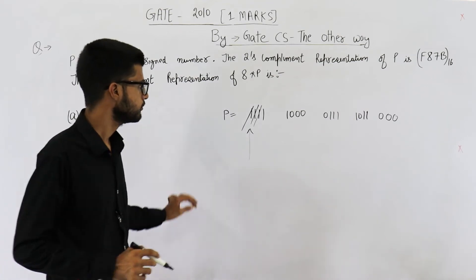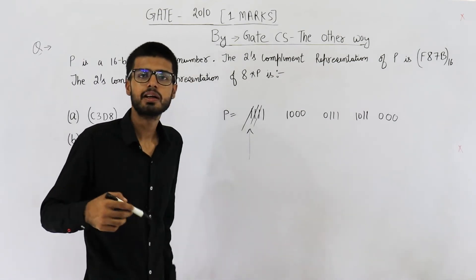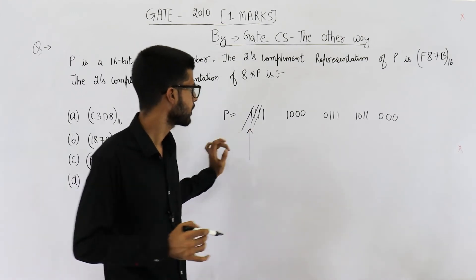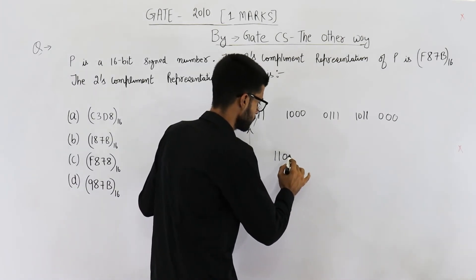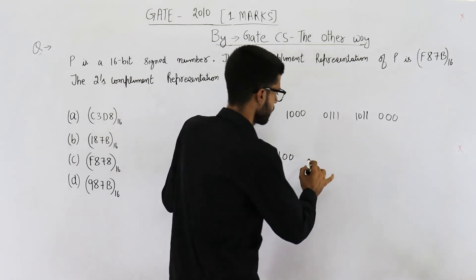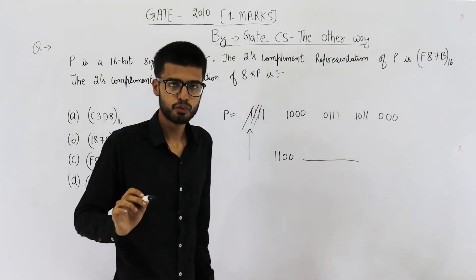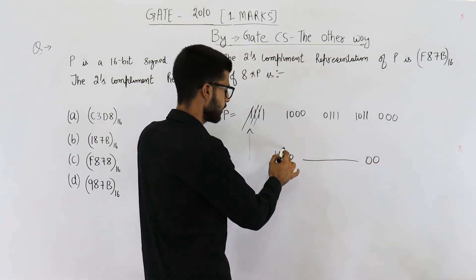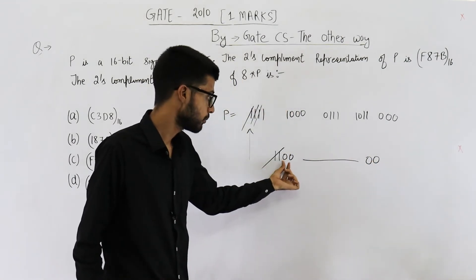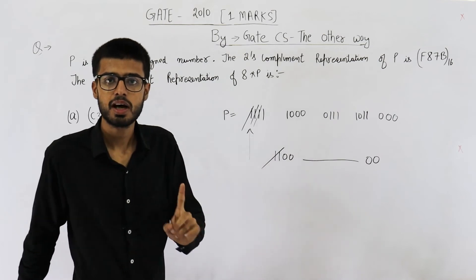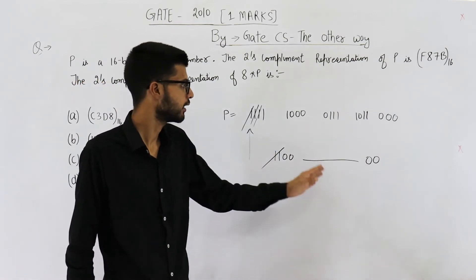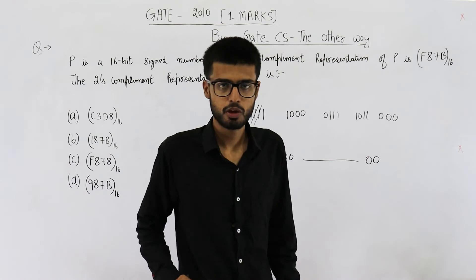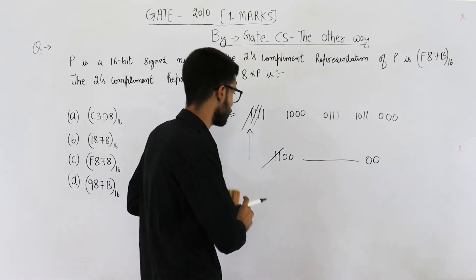But say we want to multiply it by 4 now. Now the number is 1100 something. If you want to multiply it by 4, that means you will add 2 zeros and you will delete these 2 ones. Now the number will start from 0. That means we are not able to represent our answer in 16 bits. So in that case there will be overflow. But now there is no overflow.